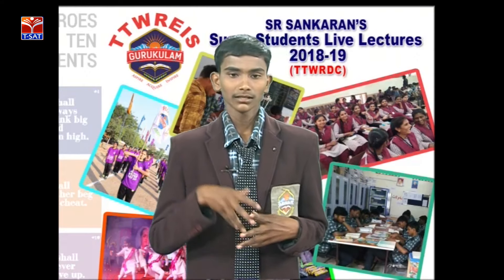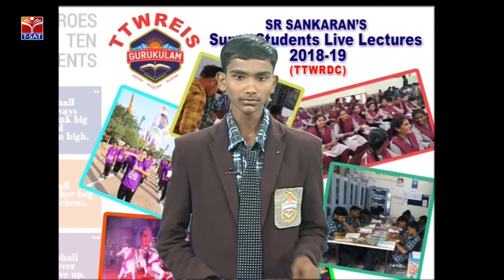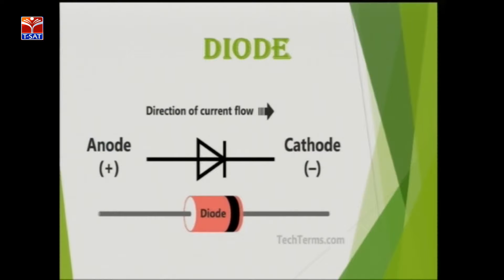Let us see about the diode. Diode is a special electronic device. In the subject of electronics, the diode plays an important role for the emission of light. The diode contains both P terminal and N terminal, and also contains two electrodes — one is anode and the other is cathode. The anode contains the positive charge, whereas the cathode contains the negative charge. You may see in the picture the symbol of the LED.